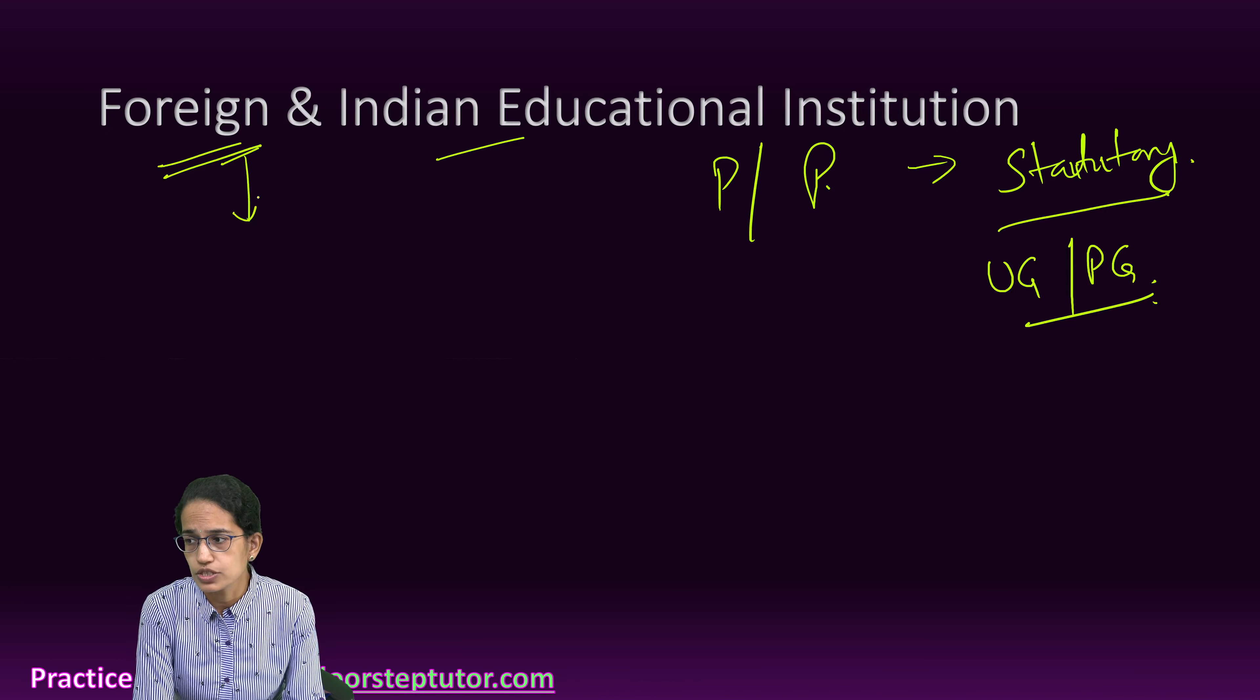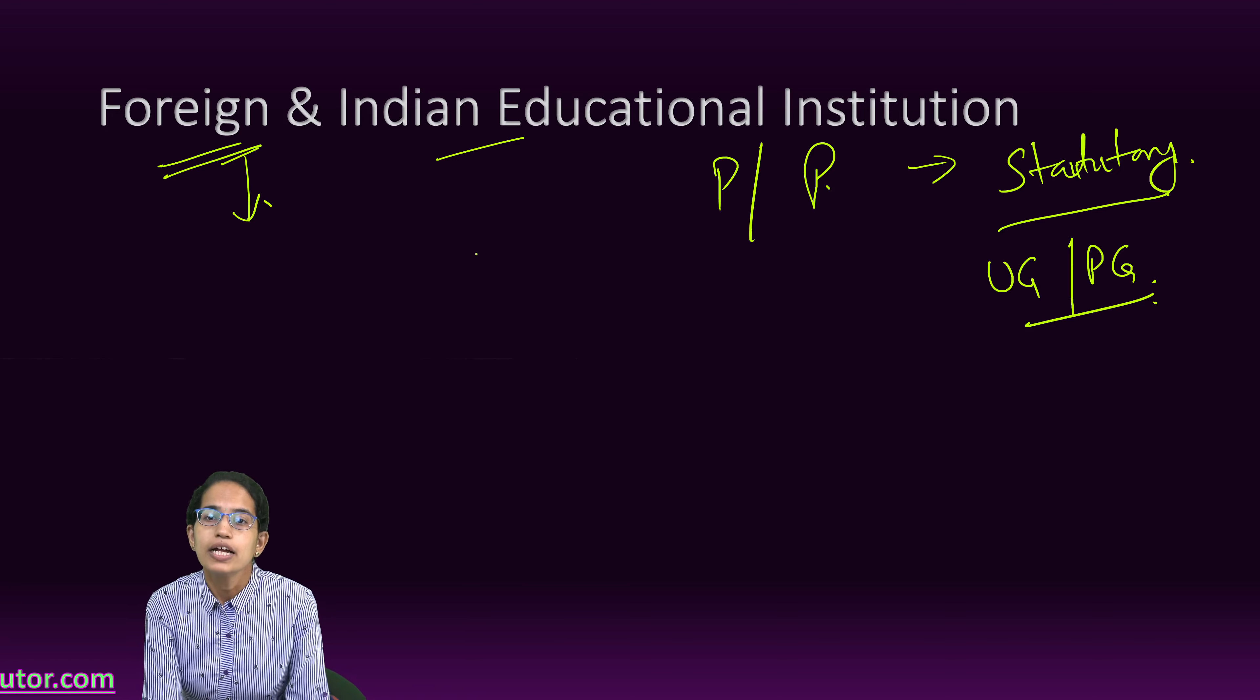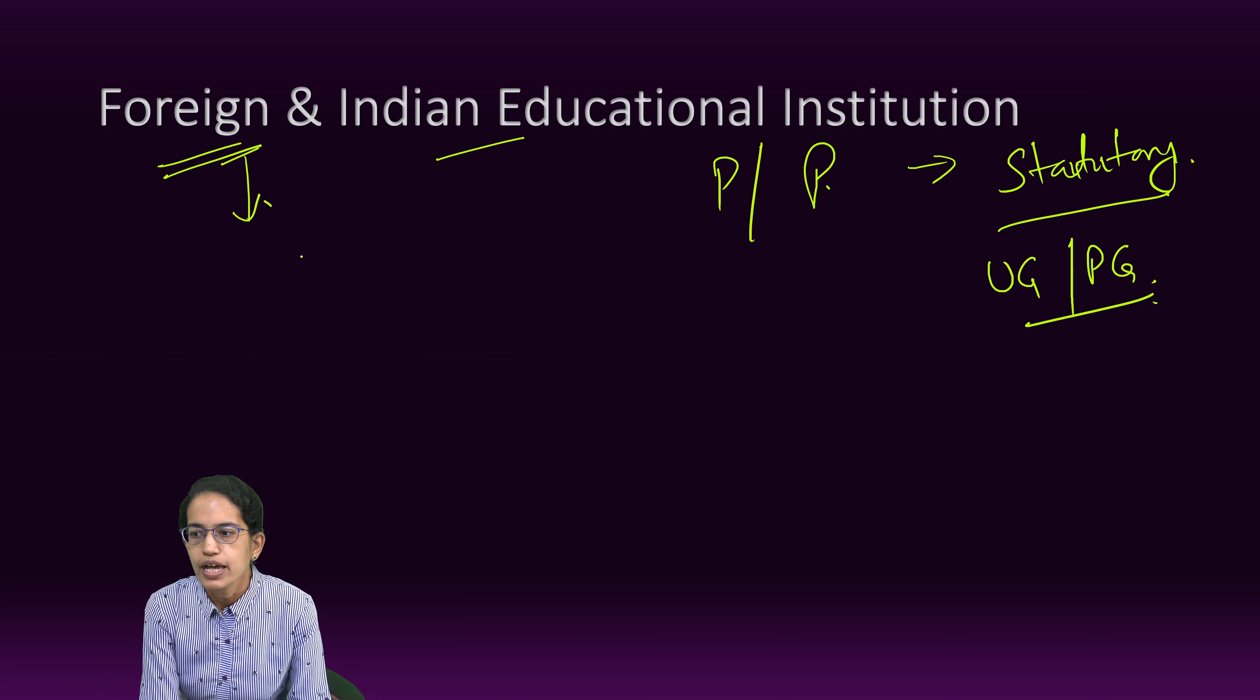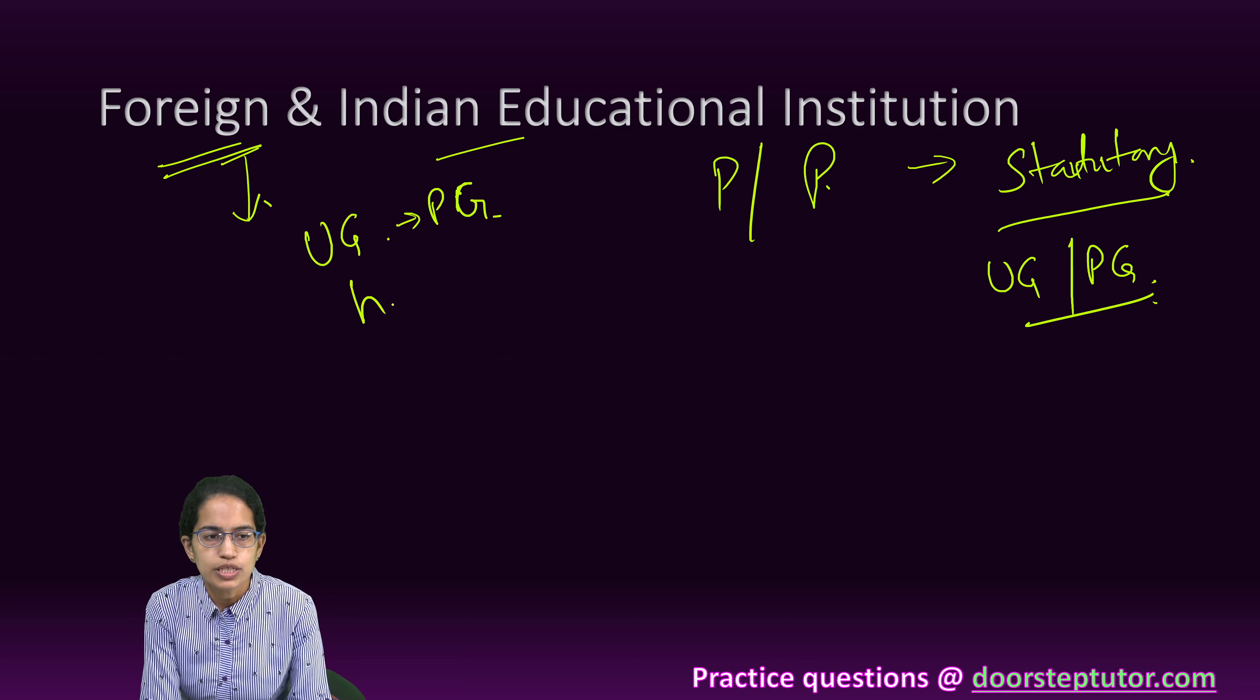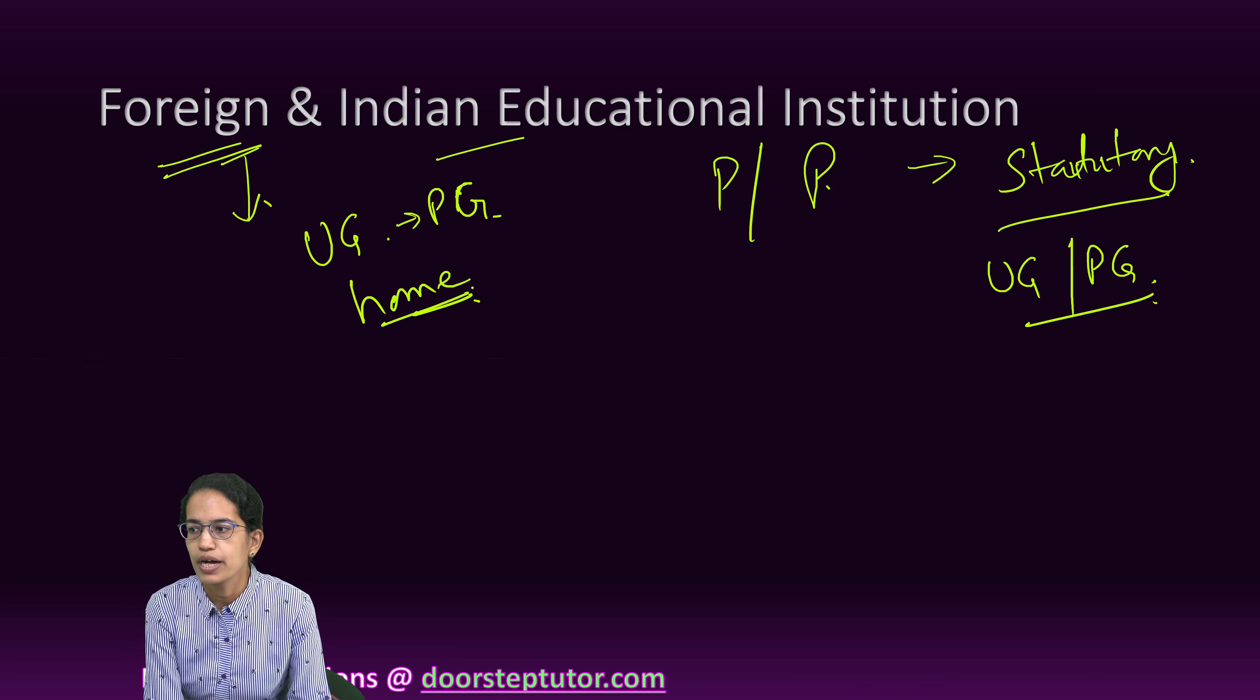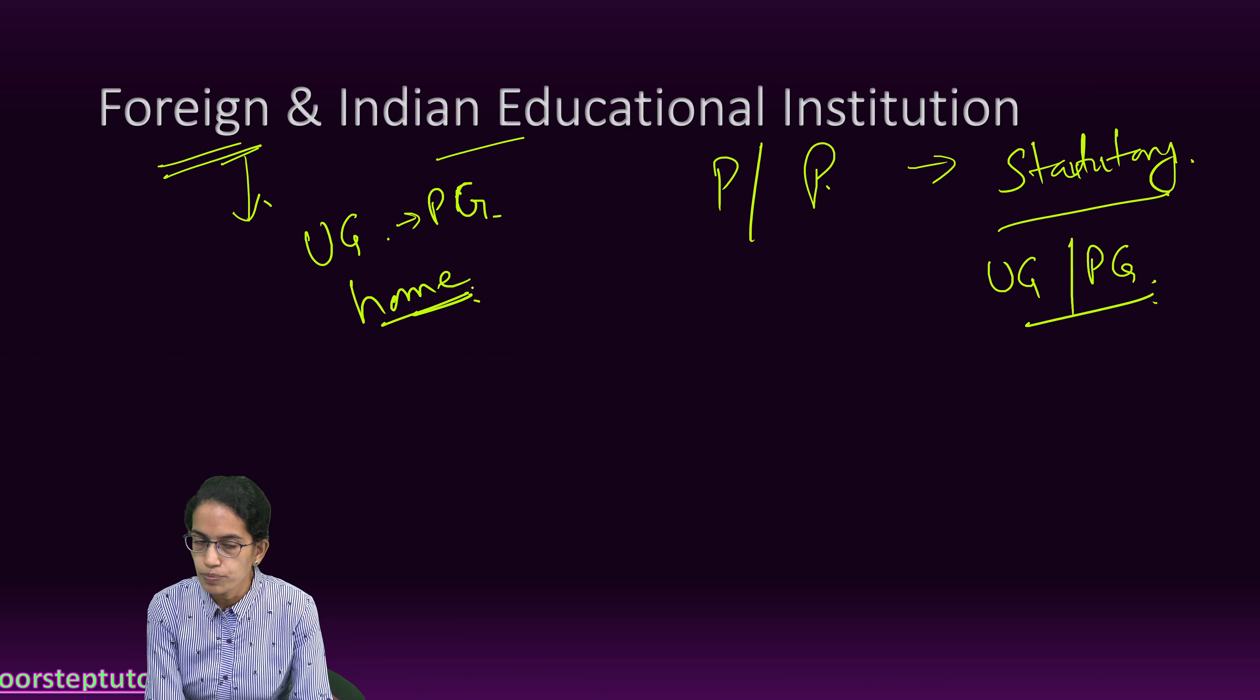The next is foreign institution. Now, under foreign institution, we have two important criteria. It is an institution which is established in the home country and is offering programs for UG or higher education within the home country. So, it is established in the home country, incorporated in its home country and then offering programs also in its home country.